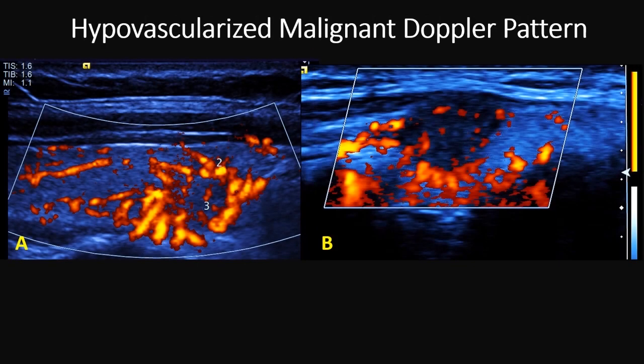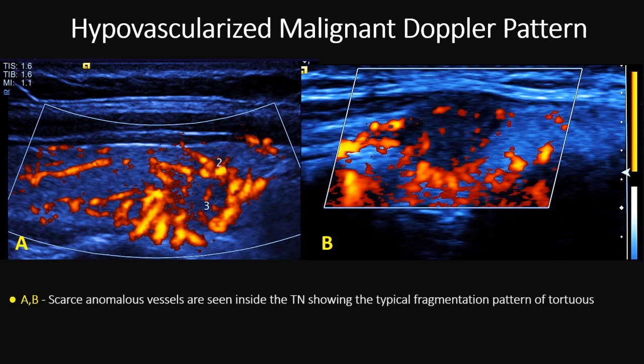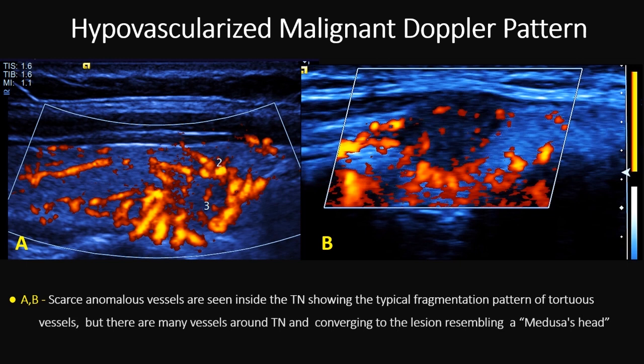Here we have two different hypovascularized malignant Doppler patterns. Both have a small amount of vessels inside, and in both we see this typical fragmentation pattern of tortuous vessels. However, there are many vessels around these thyroid nodules that resemble a medusa's head — very typical of malignancy.